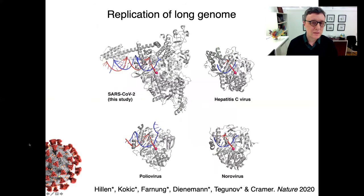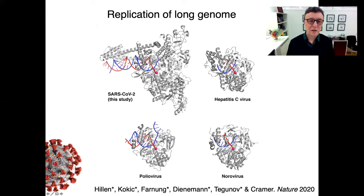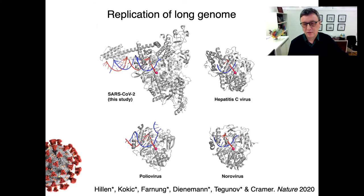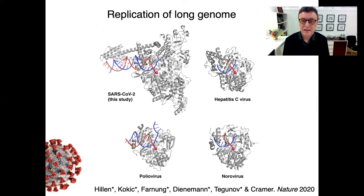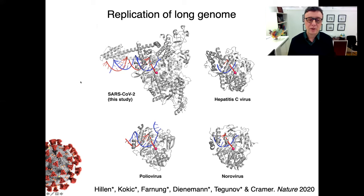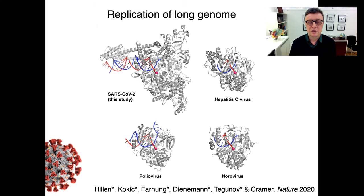What is special about this polymerase when you compare it to other viruses? One thing that is very special are the so-called sliding poles, as we have called them. These are long helical extensions of the polymerase which slide along the exiting RNA product-template duplex, and those sliding poles were not observed for other polymerases of viral nature — for example the hepatitis C, poliovirus, or norovirus polymerases. They have very similar active centers for RNA synthesis but they are lacking these sliding poles.